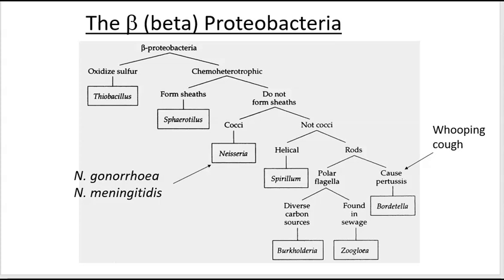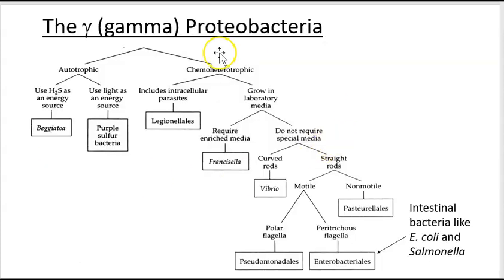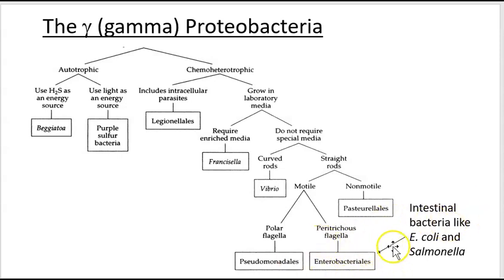The gamma proteobacteria is another large group that includes the organism causing Legionnaire's disease and the organism causing cholera — where contaminated water leads to serious dysentery or diarrhea. The Enterobacteriales includes the enteric bacteria such as E. coli and Salmonella, which are both gram-negative bacilli with peritrichous flagella — flagella all over the cell surface.